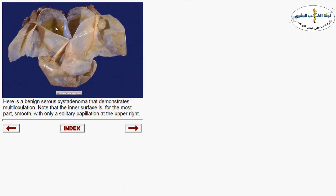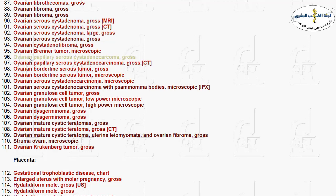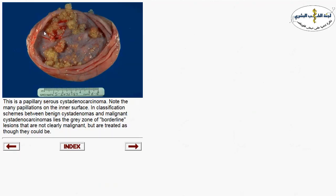Here you can see a cyst filled with serous fluid, with smooth inner and outer surface, no papillary growth, and one solid growth. If you take sections from this neoplasm, it is lined by simple ciliated columnar epithelium — this represents serous cystadenoma, a benign epithelial tumor of the ovary. Comparing with a cystic structure filled with many papillations and solid inner growths — this represents the malignant counterpart: serous cystadenocarcinoma.